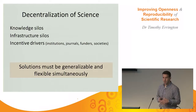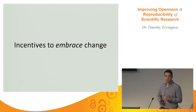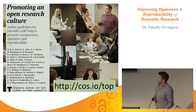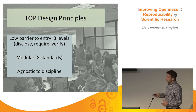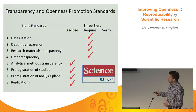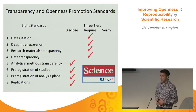It's not one-size-fits-all — it's a nudging to align things, and solutions have to be generalizable and flexible. One initiative from the journal and funder standpoint is the TOP guidelines — Transparency and Openness Promotion guidelines — that over 5,000 journals and 75 organizations have signed. They're meant to be a low barrier to entry and modular: eight different aspects, agnostic to discipline. The standards range from data citation, transparency of design, methods, data analysis, and pre-registration, to replications — with levels of disclosure, requirement, or verification.